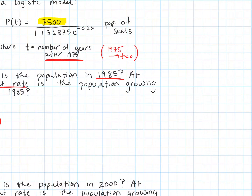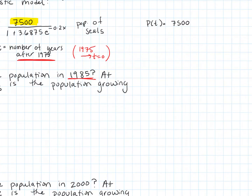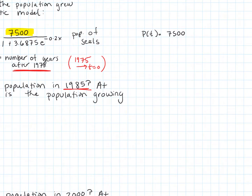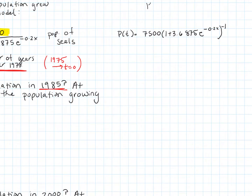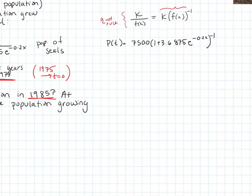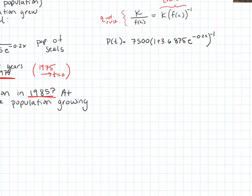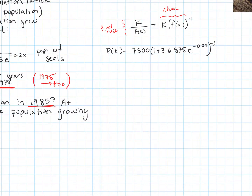P of T can be rewritten as 7,500 times the quantity 1 plus 3.6875 e to the negative 0.2x, raised to the negative first power. We could use the quotient rule, but I prefer to use the chain rule with this form — treating it as a constant times a function to the negative first. It's a matter of personal preference; if you prefer the quotient rule, go for it.